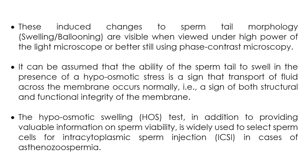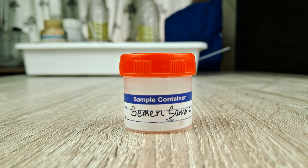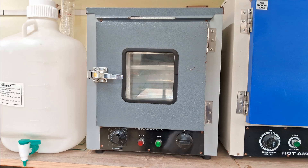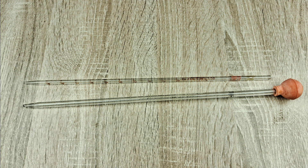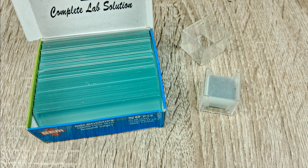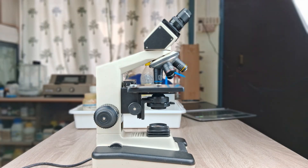To perform the HOS test, you will need: a liquefied semen sample, HOS reagent, a 2 ml Eppendorf tube or any suitable vial with a tight-fitting cap, an incubator set at 37°C, a 1 ml micropipette with pipette tips or two 1 ml serological pipettes, a dropper, a glass slide and cover slip, and a compound light microscope or phase contrast microscope.